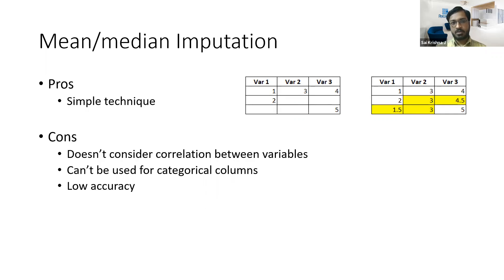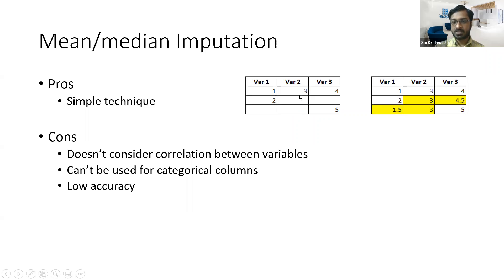The first method is mean or median imputation. We have two tables — the left table is the raw data. We have three variables, each with certain values, and the empty cells are the missing values. For mean imputation, for a particular cell you take the mean of the available values — for example, the mean of 1, 9, and 2 becomes 1.5. Here you take the mean between 4 and 5, which gives 4.5. This is how you do mean imputation. If you had a very large range of numbers, you could also go ahead with median imputation.